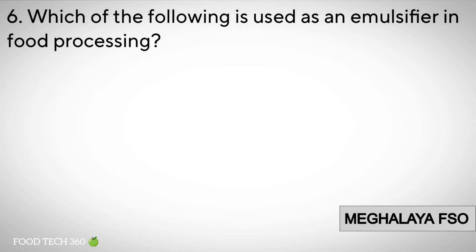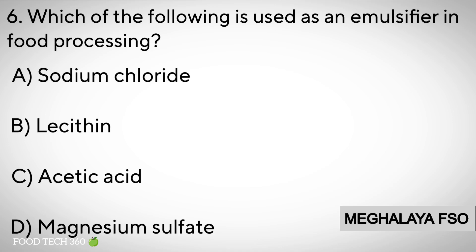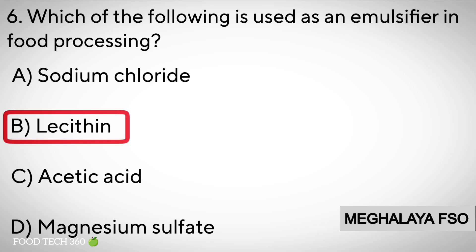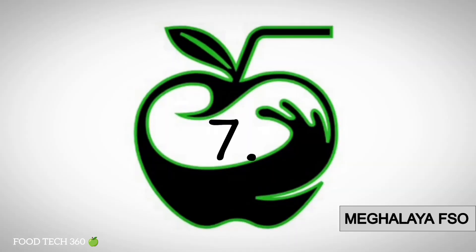Question number six. Which of the following is used as an emulsifier in food processing? A. Sodium Chloride, B. Lecithin, C. Acetic Acid, D. Magnesium Sulphate. Correct answer: B. Lecithin.